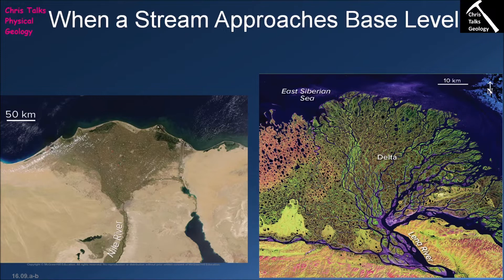Base level is the lowest point to which a river can erode, and the ultimate base level is of course sea level. When your river hits a base level, be it sea level or another intermediate level, the river will essentially lose the capacity to erode because it can't go any lower. At that point all it can really do is transport sediment or deposit sediment, and in most cases the river will typically deposit sediment. This is because most base levels occur in terrains where the gradient is very low.